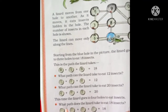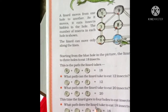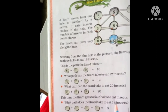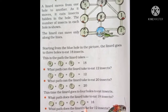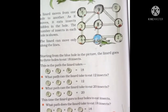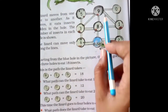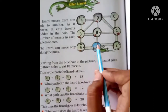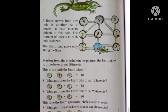What path does the lizard take to eat 18 insects? Now what we have to do here — we can't go directly, we will go through the path. Where there is no path we cannot go directly. We have to follow this path and create a total of 18. Which four numbers will we add to make 18?